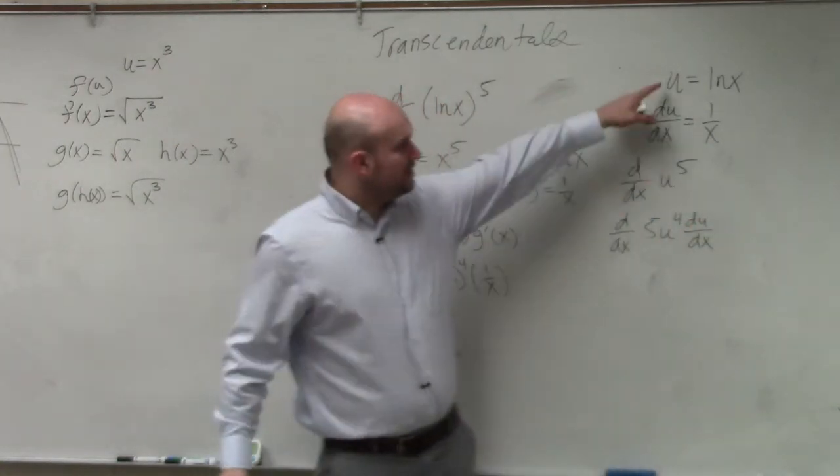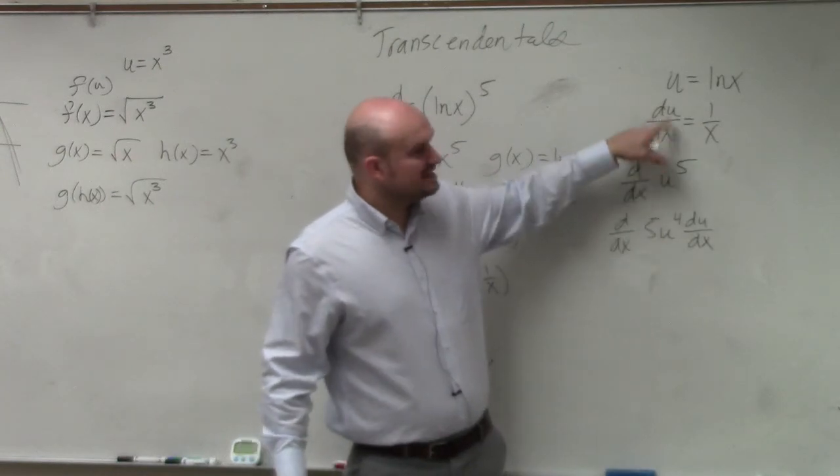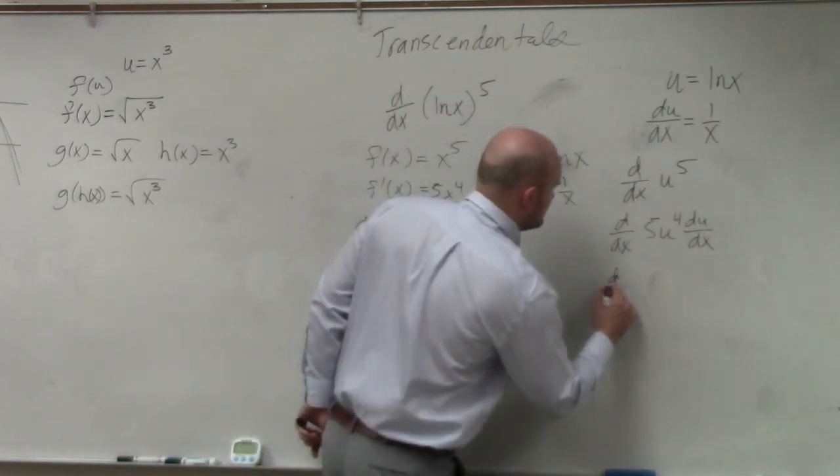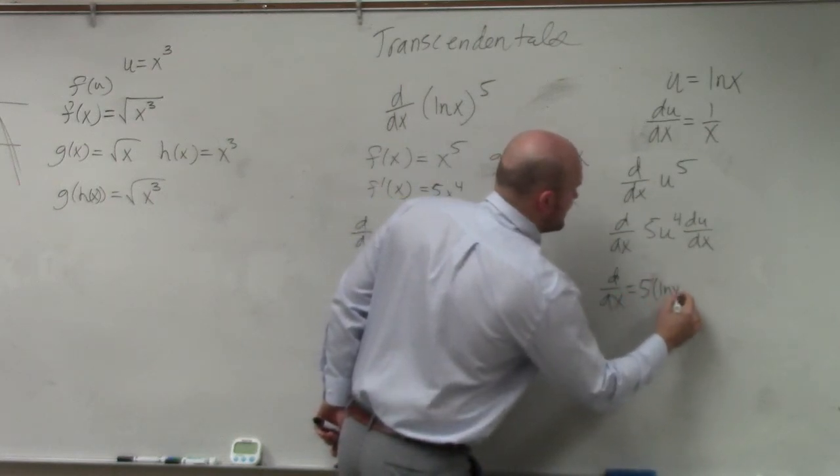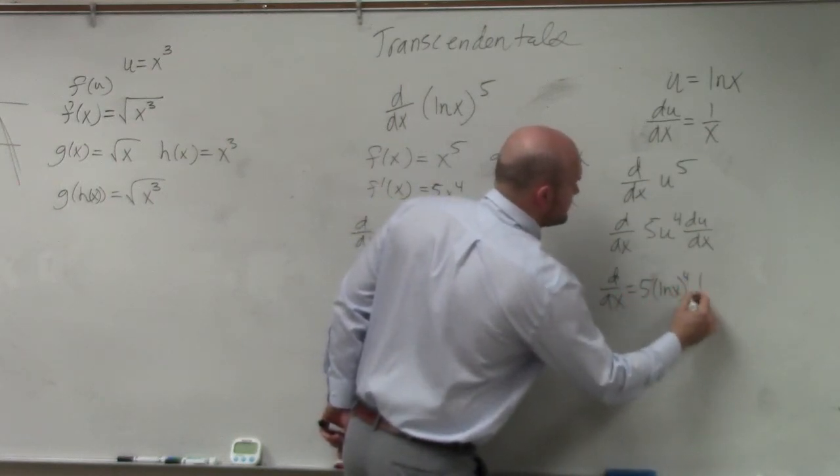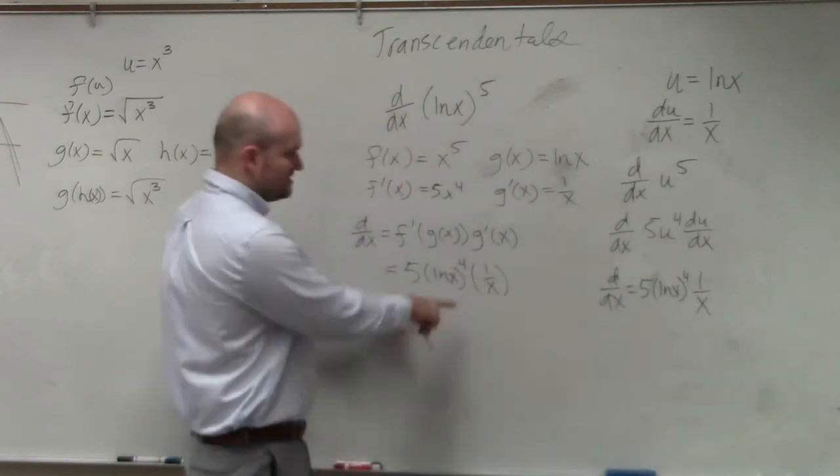Well, we know what u is. That's ln(x). And we know what du/dx is, which is 1 over x. So d/dx is 5 times ln(x) raised to the fourth times 1 over x, which is exactly what we have here.